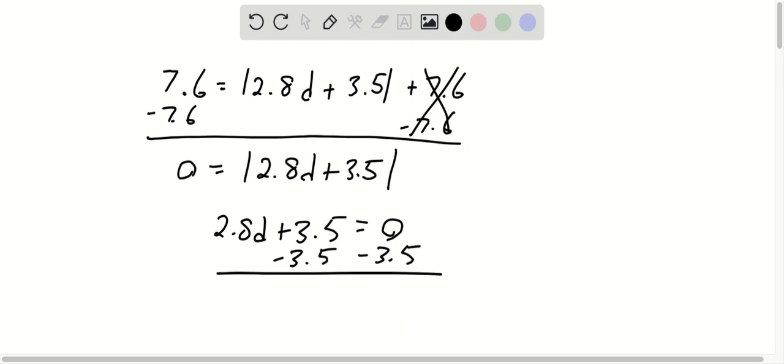So let's go ahead and subtract 3.5 off both sides. We get 2.8d equals negative 3.5.